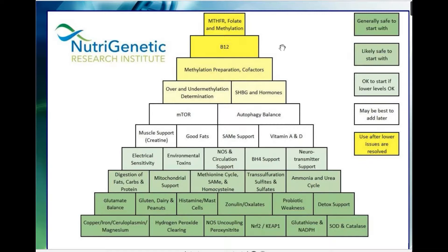Generally, when we look at a lot of chronic health situations, we come back to MTHFR, methylation. We hear a lot about MTHFR and folate, vitamin B12. That's not where we want to start. We've got to start looking upstream and start asking questions — why is there a problem? We're going to be talking about the NOS coupling and peroxynitrite primarily in this video.